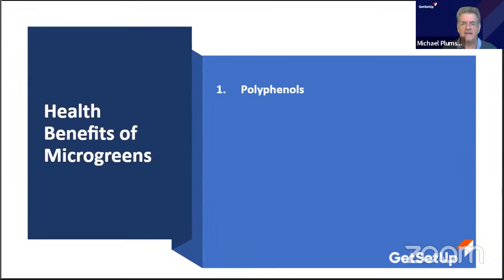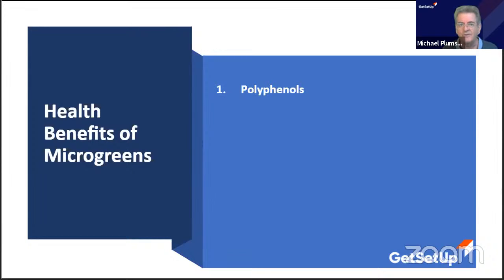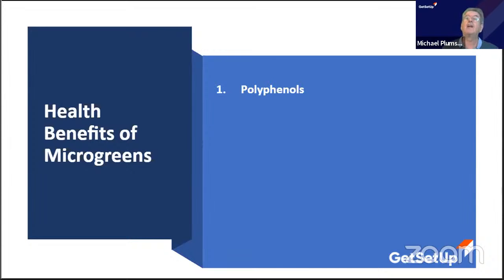For a strong immune system, your microbiome needs to be healthy and nutrients need to be absorbed. You might be taking supplements but not know if they're working unless you test. With microgreens, whether you have an unhealthy microbiome or a leaky gut, the microgreens are going to help heal it.